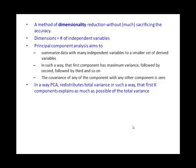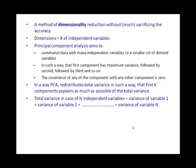The total variance in case of N independent variables is nothing but the sum of variance of variable 1 plus variance of variable 2, variance of variable 3, till variance of variable N.